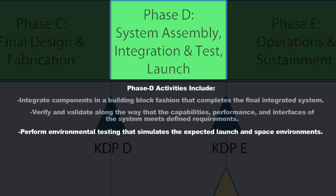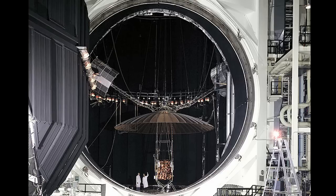For satellites, you're going to perform environmental testing that simulates both the expected launch environment — the vibration and acoustics of launch — and the space environment, including vacuum, heat and cold, and all other environmental factors found in space. You simulate on Earth what those environments will be by putting the spacecraft through a series of tests to make sure it should work as expected when it gets into that environment.